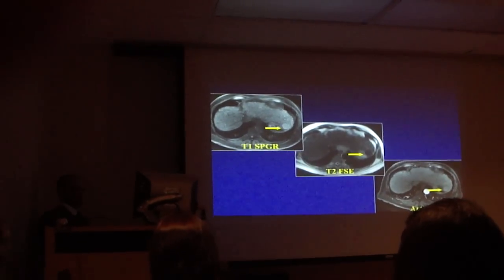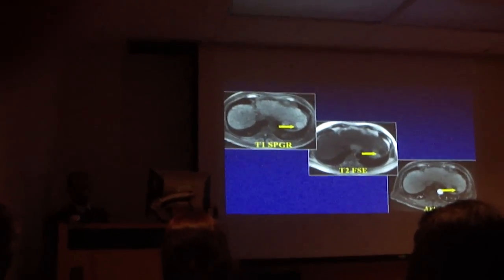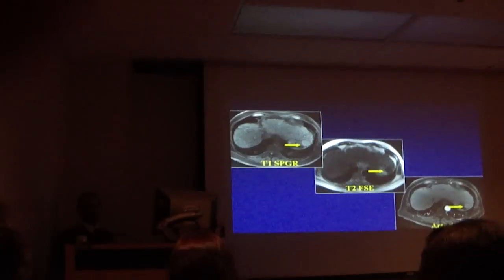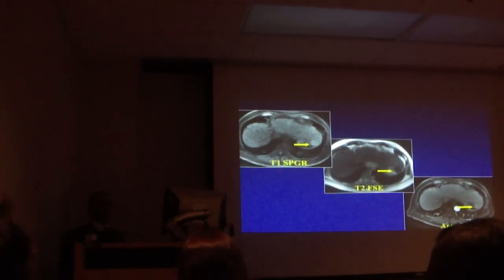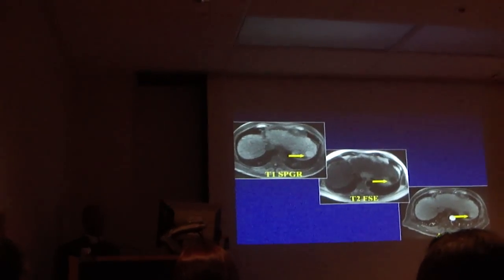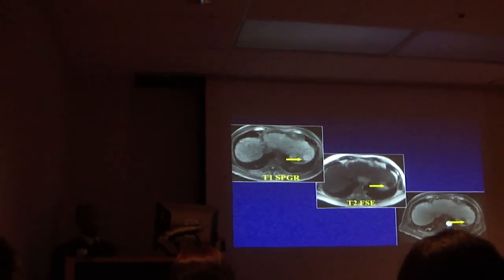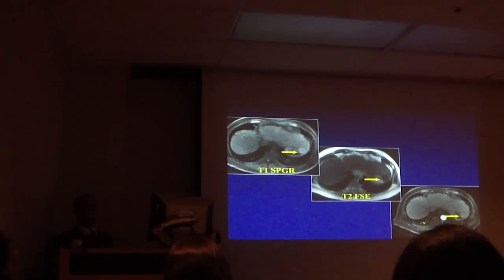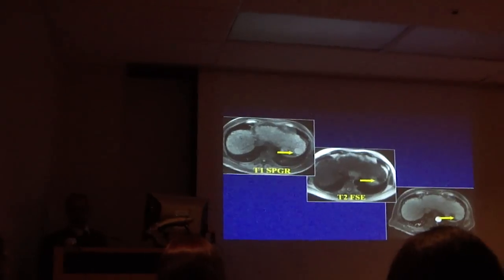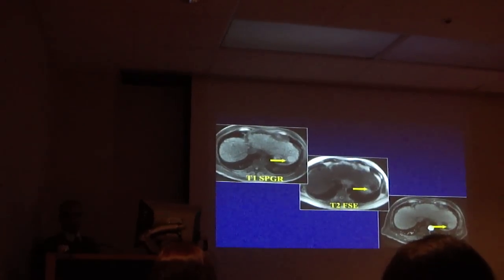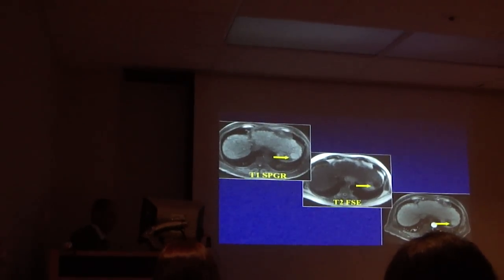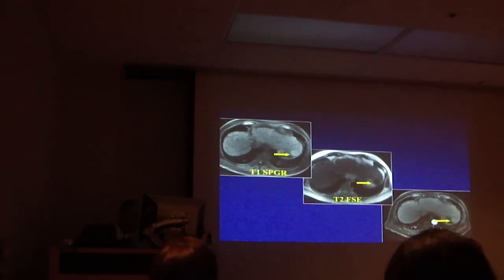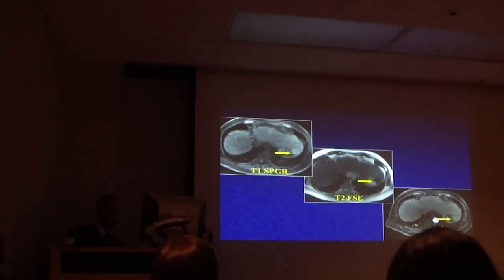How does it behave on T1 and T2 signal intensity? If it was a fibrothecoma of the ovary, on T1 and T2 weighted images it is low signal intensity. So why is the fibrosis in the liver here high signal intensity?